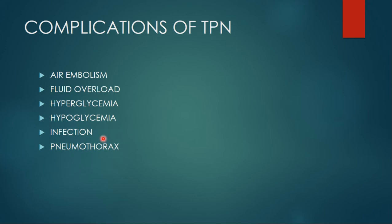Then is infection — the invasion and growth of germs in the body. The germs may be bacteria, viruses, yeast, fungi, or other microorganisms. Adult patients receiving total parenteral nutrition experience an increased risk for developing a central line-associated bloodstream infection.